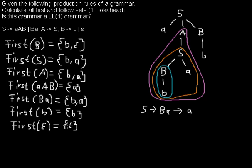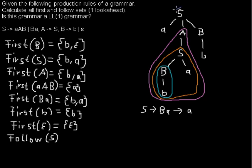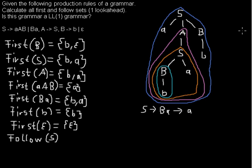Now we want to calculate the Follow sets. Let me explain what Follow is. As you can see in this tree, the capital B will be followed by an A — or you can see it in this rule, this B is followed by an A in the grammar. First I want to calculate the Follow set of S. We have an important case because S is the starting symbol, so S will be followed by the end of the word, and we mark the end of the word by the dollar sign. So in the Follow set of the starting symbol there is always the end-of-word sign.